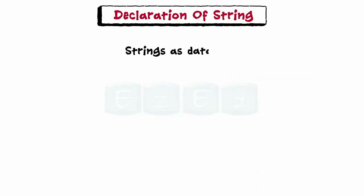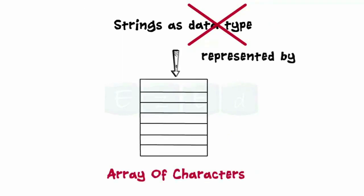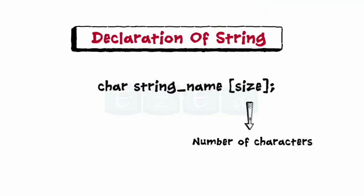Now let's learn the declaration of strings. Strings are not supported in C as a data type, but they can still be represented in the form of an array of characters. It is declared in this way, where size represents the number of characters in the string.